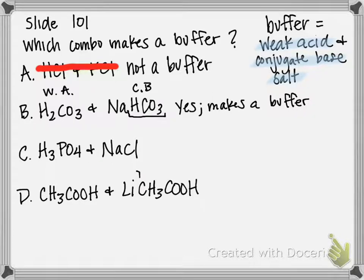For option C, let's look at the first component, H3PO4. It is a weak acid. But if we look at the second component, these two have nothing to do with each other. They don't have any of the same components. Therefore, this is not a buffer. One's a weak acid, the other is a salt, but it's not the conjugate base salt.